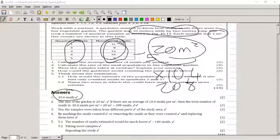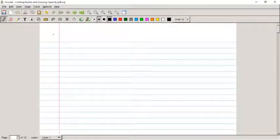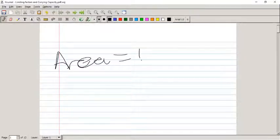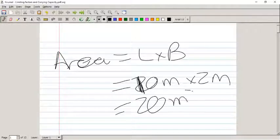So they said the garden was 10 meters wide by 2 meters long. If we take area, area is length times breadth. Area equals length times breadth, and it was 10 meters long times 2 meters wide, which gives you 20 square meters.